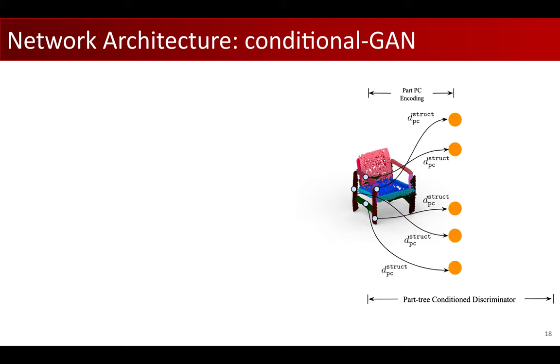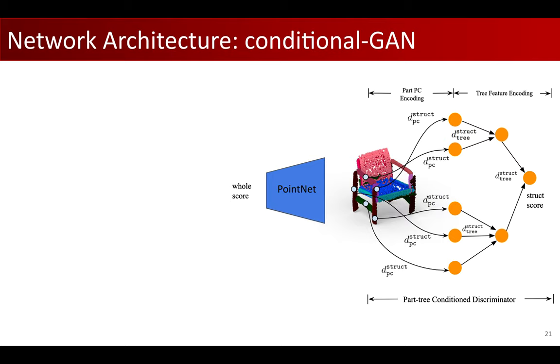For the discriminator, we first summarize the generated leaf node geometry features using a point cloud encoder. Then, we hierarchically move to higher levels and abstract node features using a tree feature encoder by aggregating the children geometry information. We repeat until reaching the root node. This is where the final real or fake score is predicted.